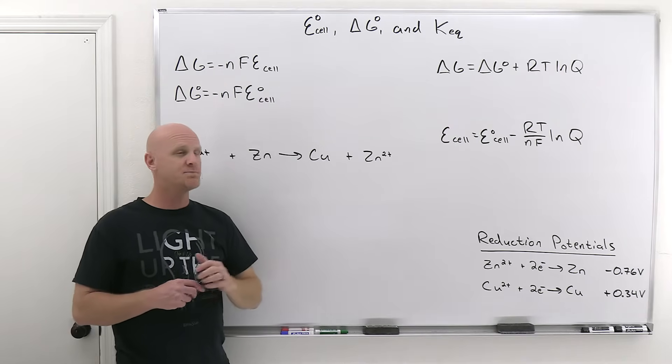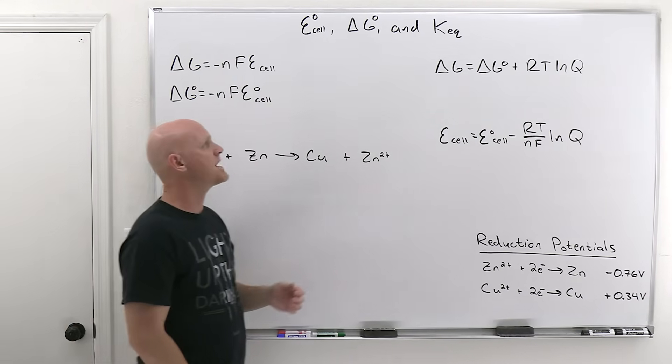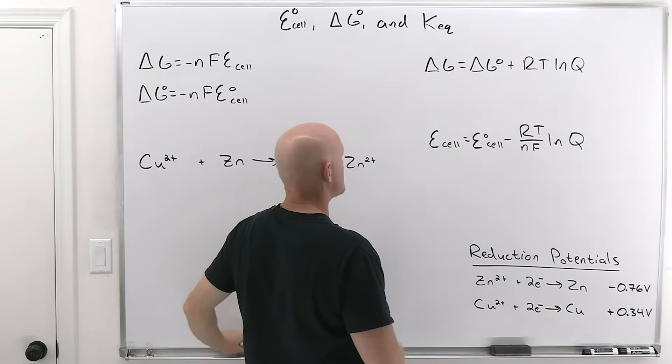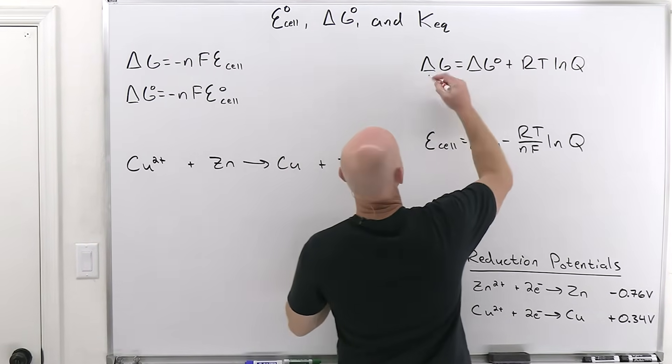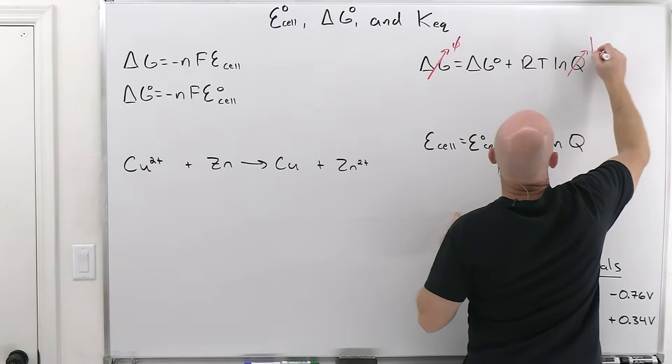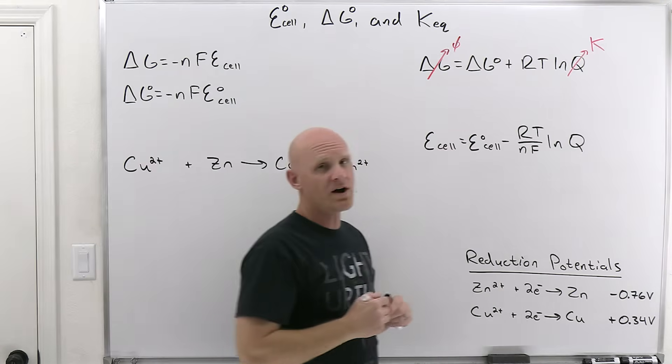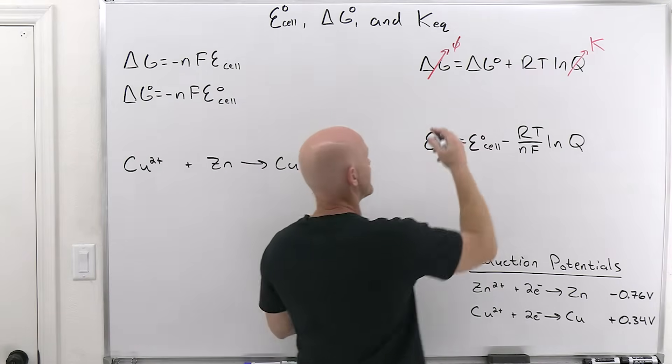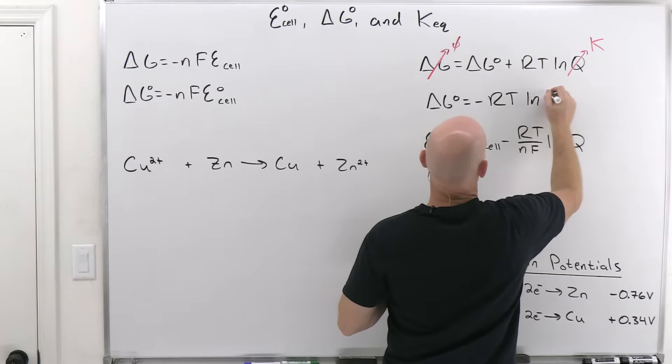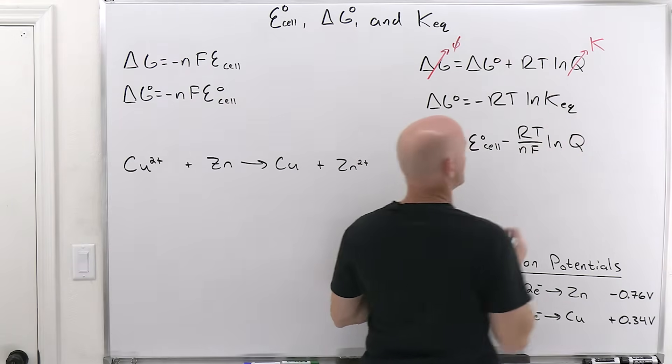They're mathematically interdependent. Now, back in the thermodynamics chapter, we saw a relationship between delta G and the standard value for delta G, and we found out that at equilibrium, delta G went to zero, and Q equaled the equilibrium constant, and we got another relationship out of that, that delta G standard equaled negative RT ln of that equilibrium constant.